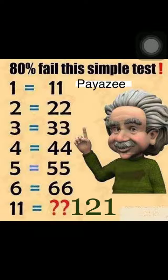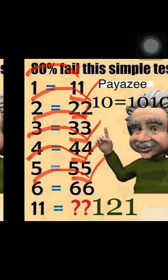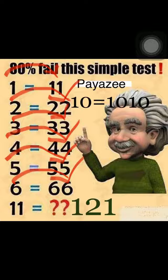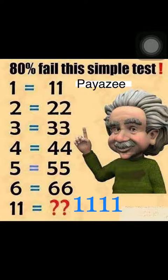On the left side it's one, on the right side it's eleven. So if you append the value one on the left side again, it becomes eleven. Similarly, if you append two with one more two, it becomes twenty-two. So one becomes eleven, two appended with two becomes twenty-two, three becomes thirty-three, four becomes forty-four, and ten appended with ten becomes ten-ten.